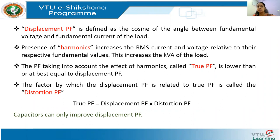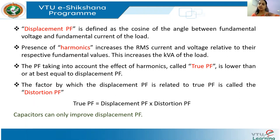Distortion results in additional current components flowing in the system which do not yield any energy — they are distortion components of power. The power supplied by the utility must be increased because some power is expended in harmonic power which yields no useful work. The power factor tends to be lower in the case of harmonics, and that component is called the distortion power factor.